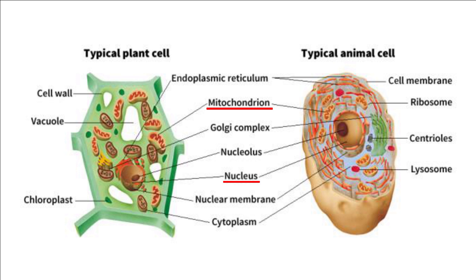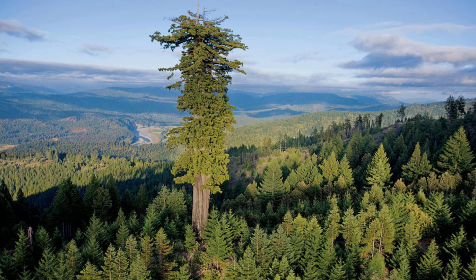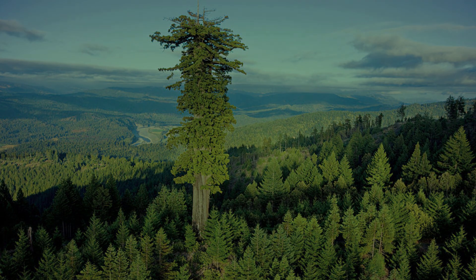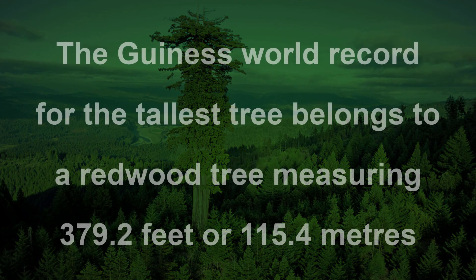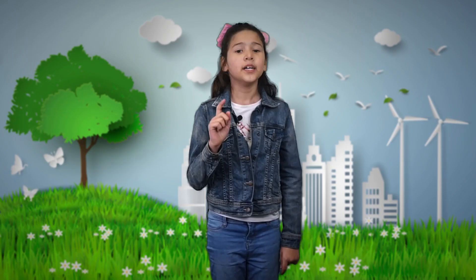For example, plant cell walls are much more rigid, as they are mainly made from cellulose, a type of complex carbohydrate made of glucose or sugar. This rigid cell wall enables trees to grow so tall.